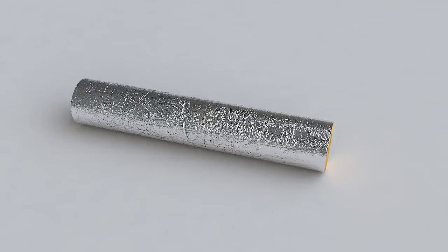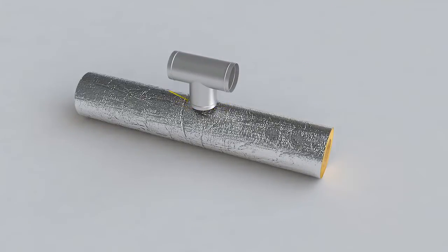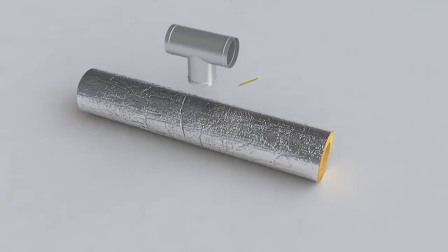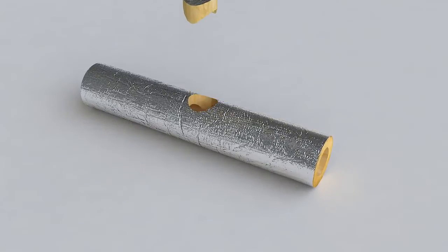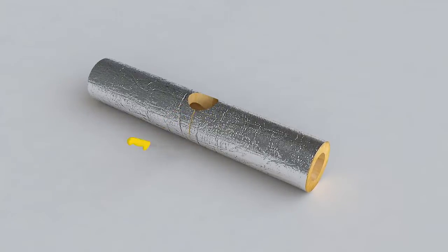Insulating a T branch is just as easy as insulating the angle sections. For a T branch, a circle the size of the projecting branch section is first drawn on the insulation and then cut and removed. The product is cut into two pieces at the center of the hole.